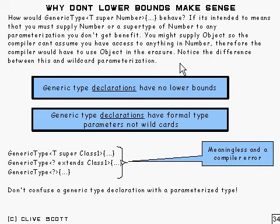Therefore, the compiler would have to use object in the erasure. So you get nothing out of it at all.